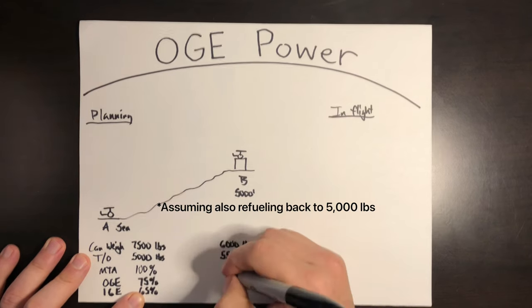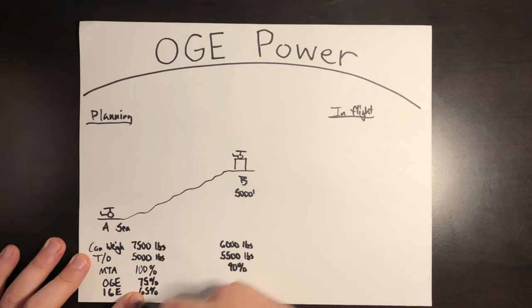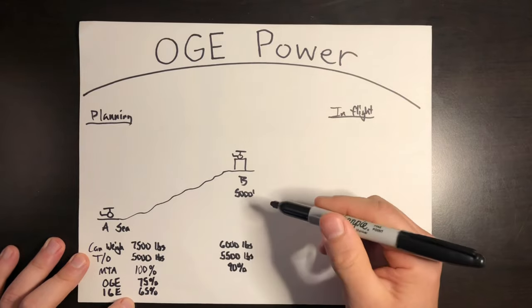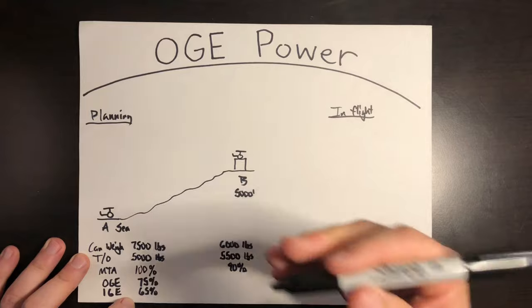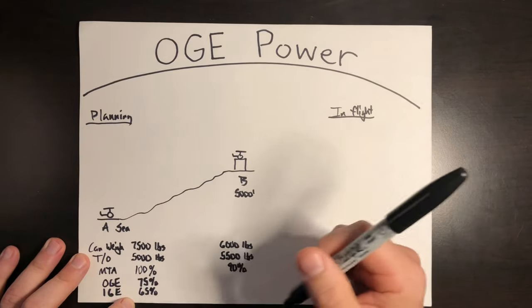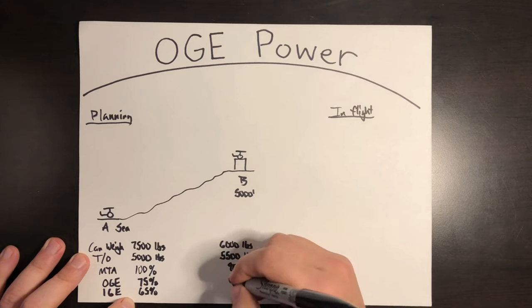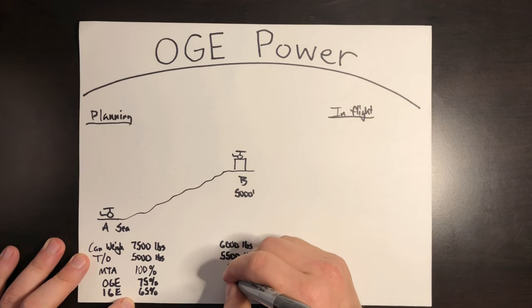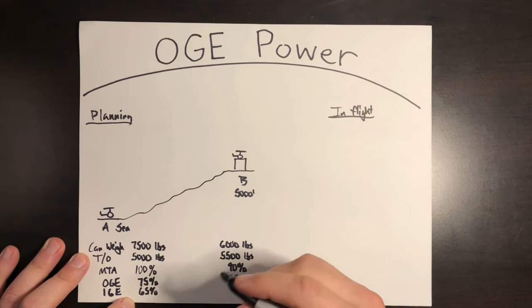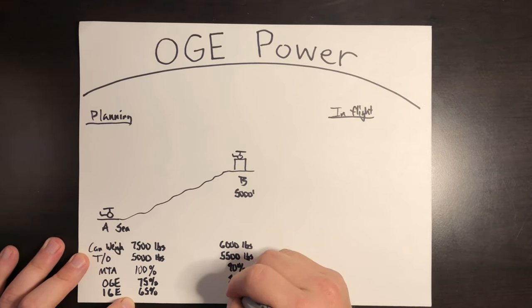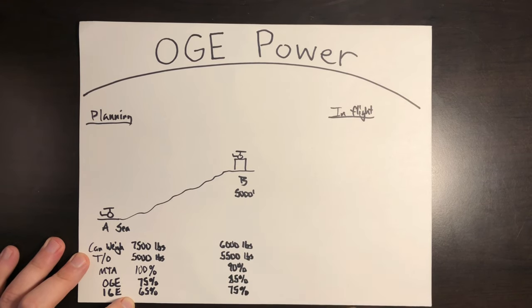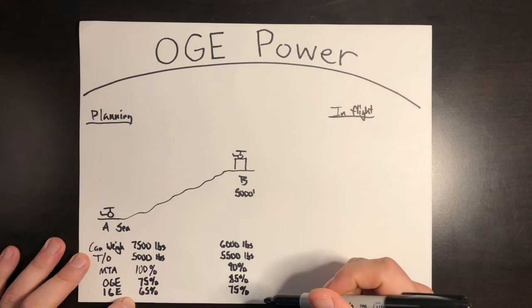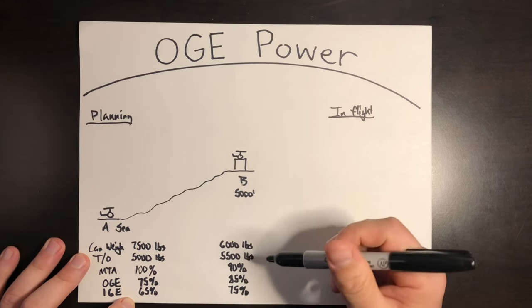Max torque available for this condition, let's say it drops down to 90%. Once again, the engines are going to limit sooner. We're getting higher in altitude, less oxygen for those engines to breathe. They're going to start to limit sooner than they would at sea level. And based on this, air is thinner. So OGE is going to come up as far as power required. So OGE goes from 75 to 85% and IGE goes from 65% up to 75%. Now the margin between power available and power required shrinks as the weight and the altitude go up.